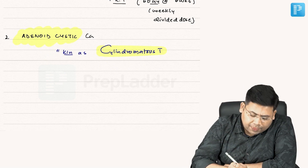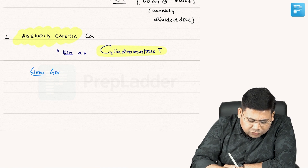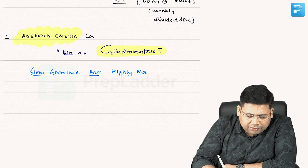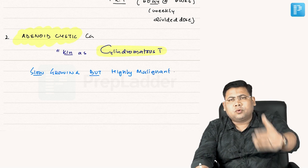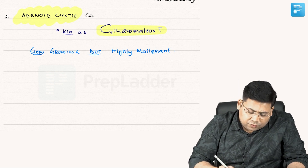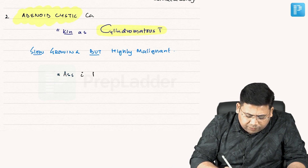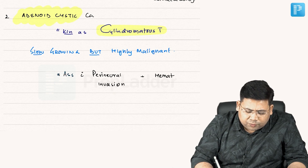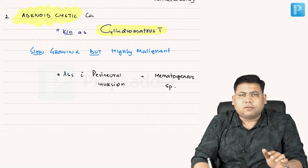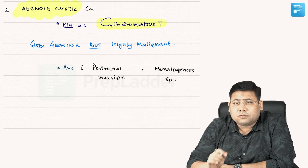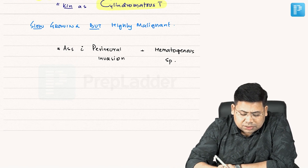Adenoid cystic carcinoma is a slow growing tumor but highly malignant. The property of this tumor that helps us conclude it is highly malignant is perineural invasion and hematogenous spread. These two properties make it very aggressive in nature, even though it is a slow growing tumor.